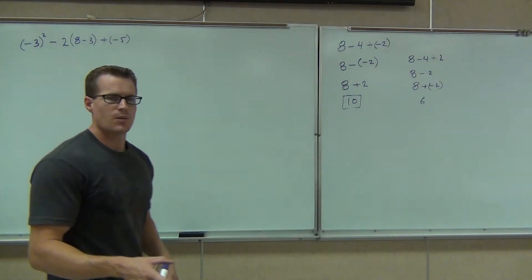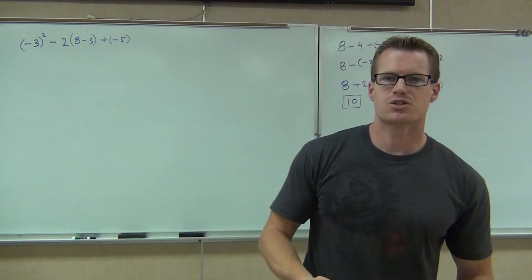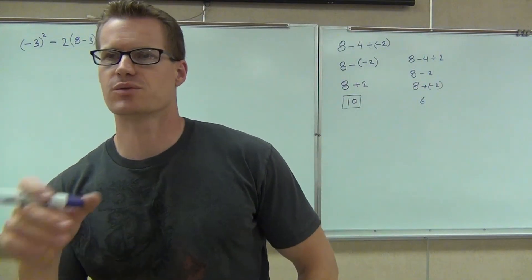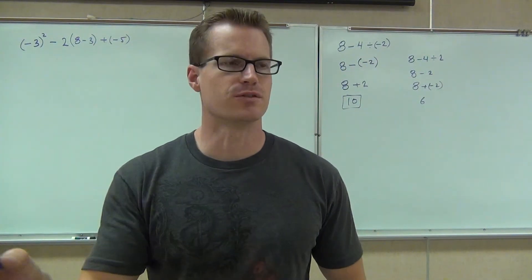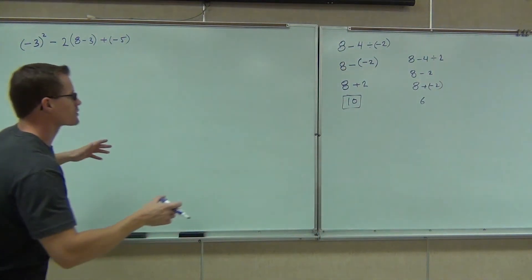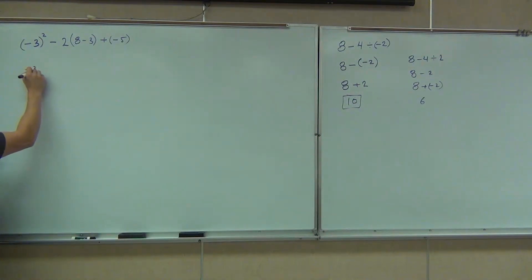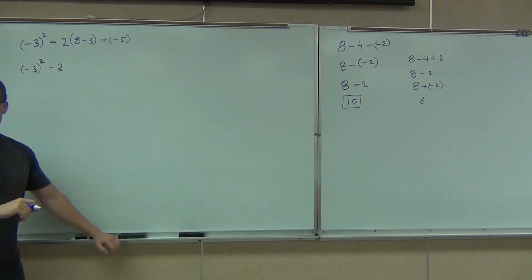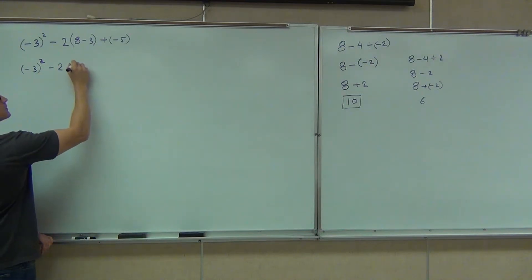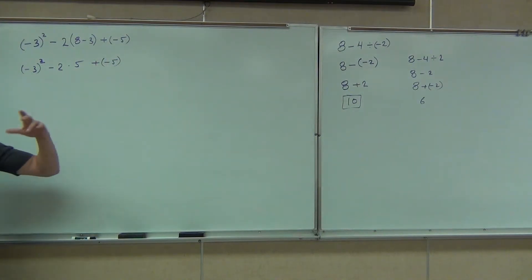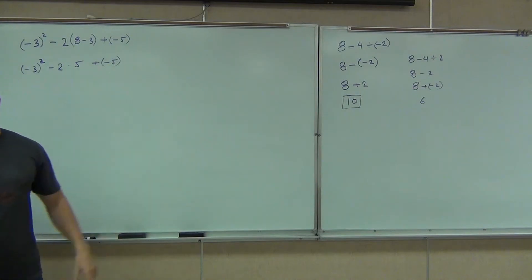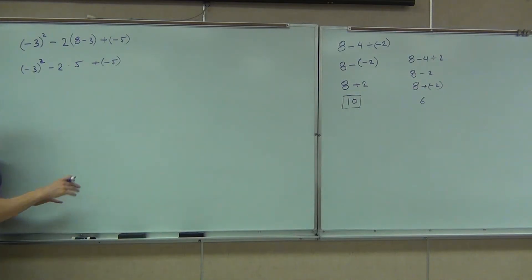We're going to do this together — I want your help on the steps. What's the first thing you would do when faced with this problem? Before the exponents even: 8 minus 3. We're going to leave everything else alone and do 8 minus 3 — that's not a bad one. We're going to get negative 3 squared, not going to touch that, minus 2 times... what is that? 5. Plus negative 5. Remember, you can keep that 5 in parentheses or not — if it were negative, we'd have to.